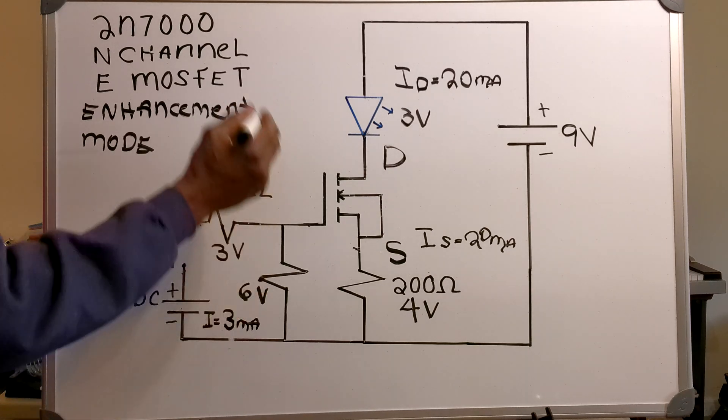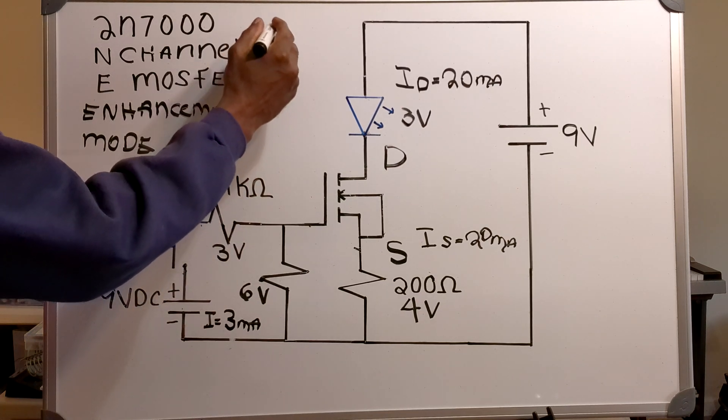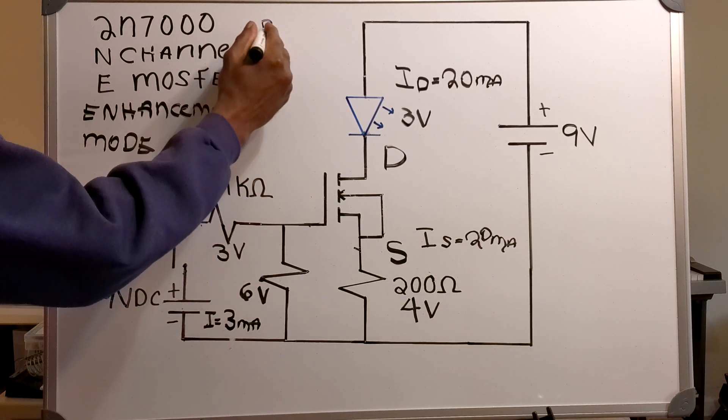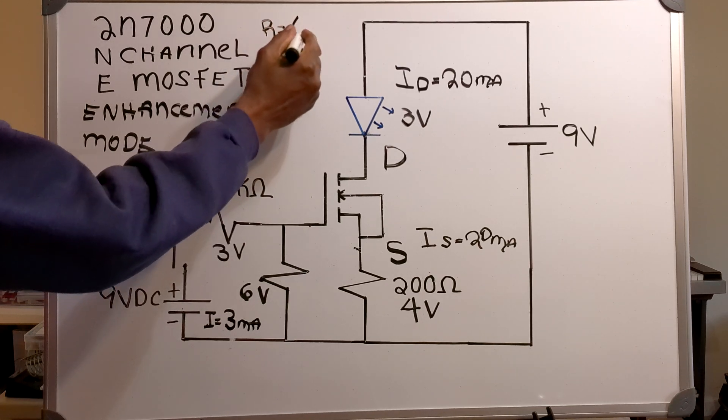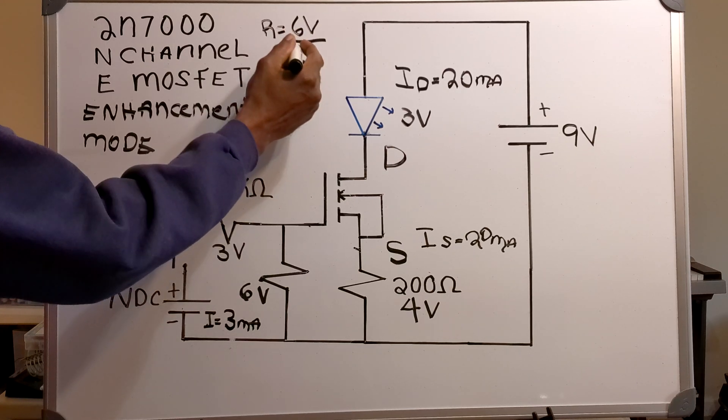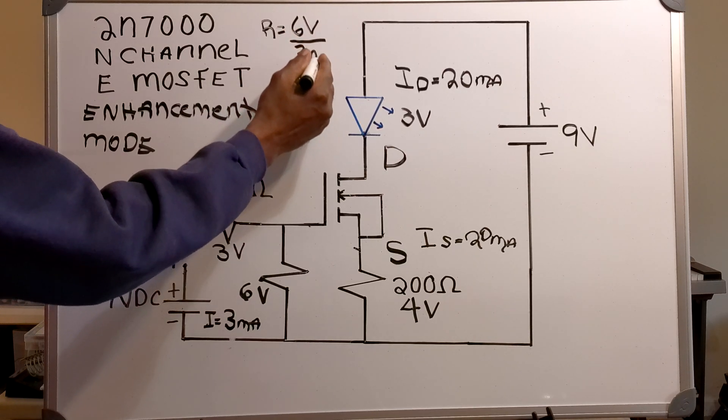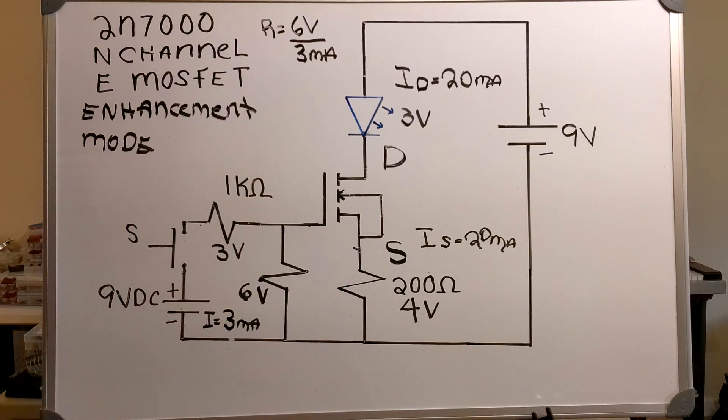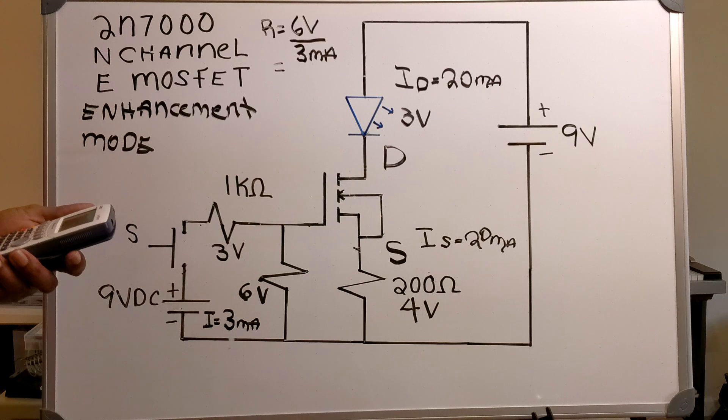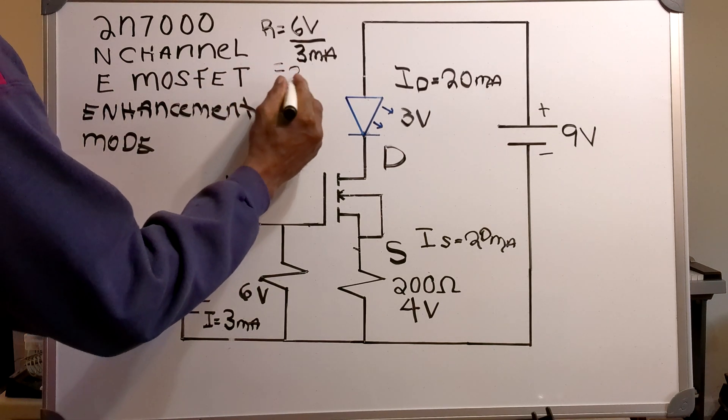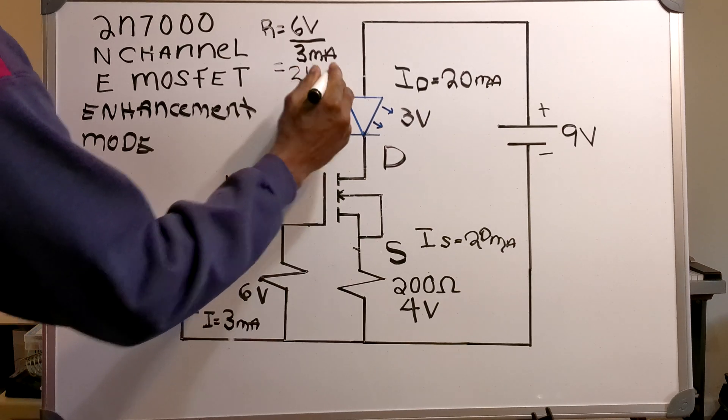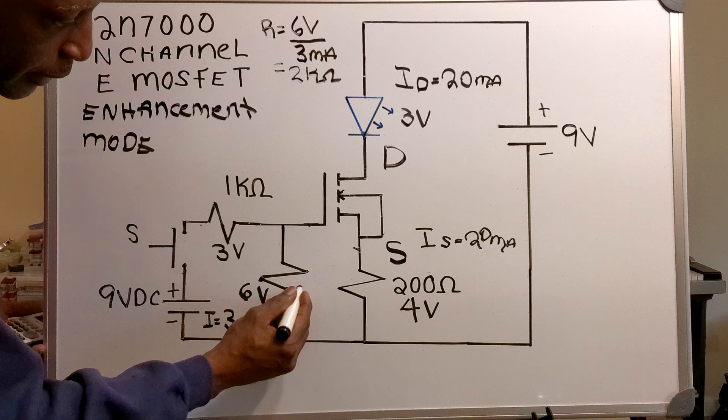So, I'm going to go 6 volts divided by 3 milliamps, and that will give me a resistance of 2K ohms. So, my resistor value right here will be 2K ohms.